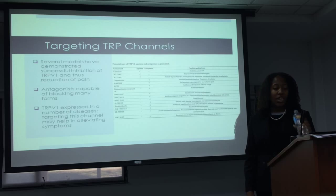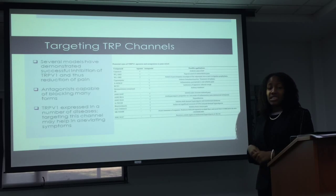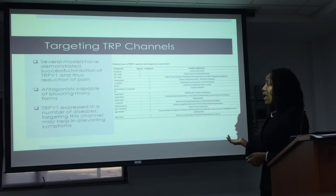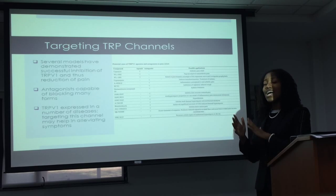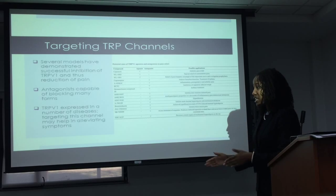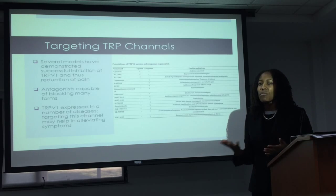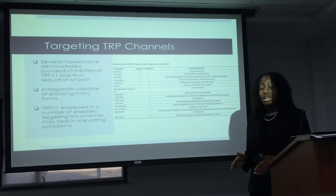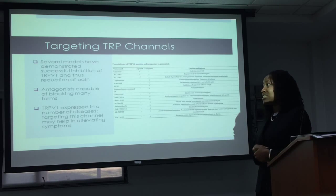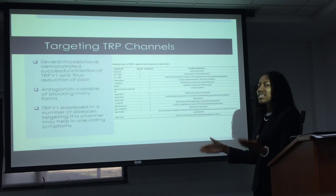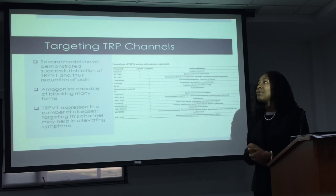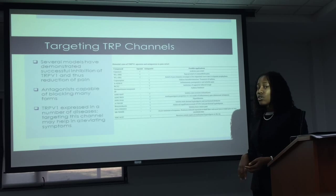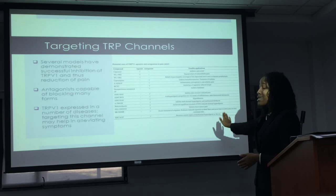Several models have demonstrated successful inhibition of TRP V1, reducing pain in many cases. Antagonists are capable of blocking many forms of TRP — not just TRP V1, but subfamilies one through six, as well as other TRP channels. TRP V1 is expressed in a number of diseases, so its application is broad and doesn't limit you to one patient population. As this chart shows, it can be used for a variety of patients, including those with diabetes, cancer, and asthma.